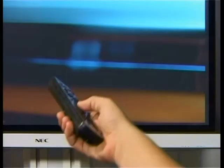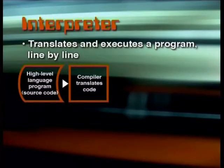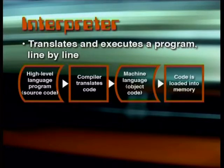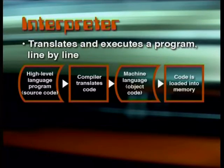The object code is then loaded into the computer's memory and executed. Now, besides compilers, we also have what we call interpreters. An interpreter takes a program one line at a time, translates it into machine code, and then loads it into the computer's memory to be executed before going on to the next line.